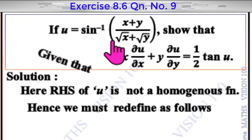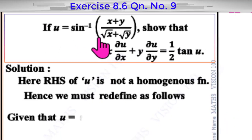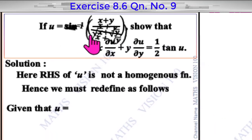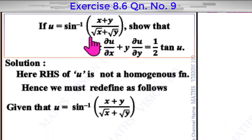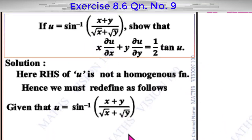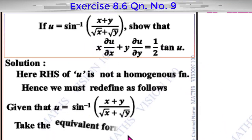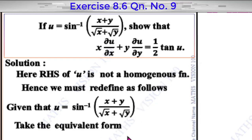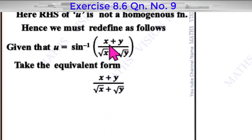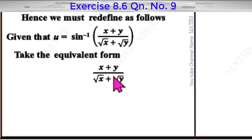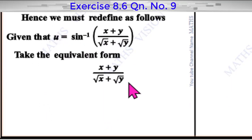Given that u is equal to sin inverse of x plus y by root x plus root y, we take the equivalent form. The inverse function gives f of x, y equal to sin u.